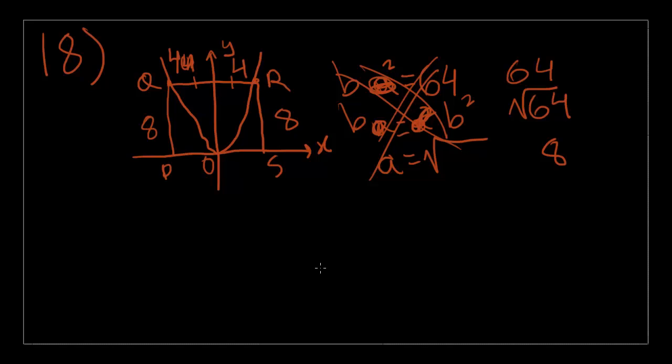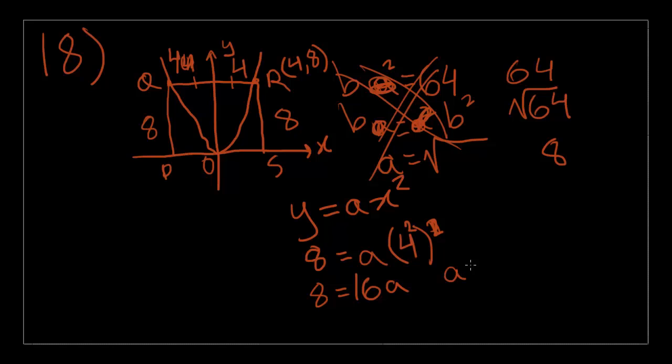Now, you're saying, well, what do you do now? So, the equation is Y is equal to AX squared. Well, like another previous problem we did, instead of trying to find the values of every single point and do backwards graphing, what you can just do is let's find the point R. Point R is equal to an X value of 4 and a Y value of 8. So, you could just plug those in. So, Y is equal to 8. 8 is equal to A times 4 squared. So, 8 is equal to 16A. 16A is equal to 8, and A is equal to 8 divided by 16, or half, or 0.5.